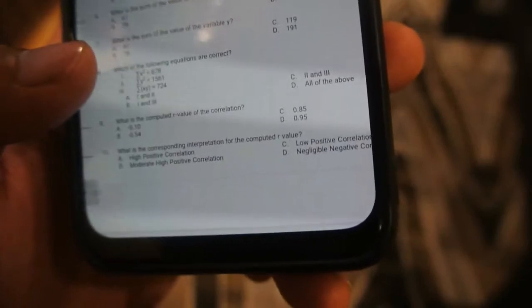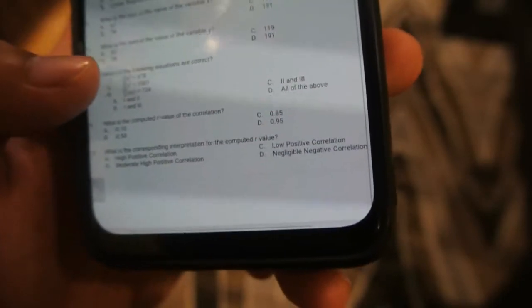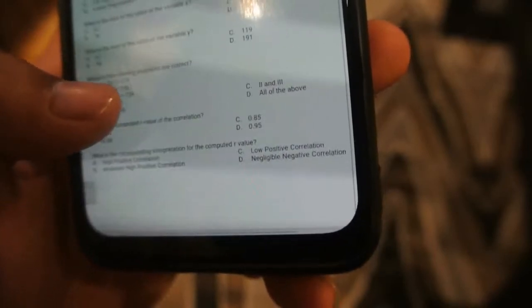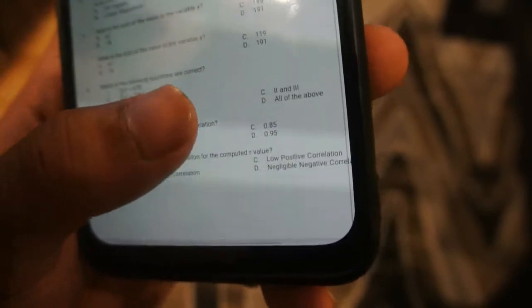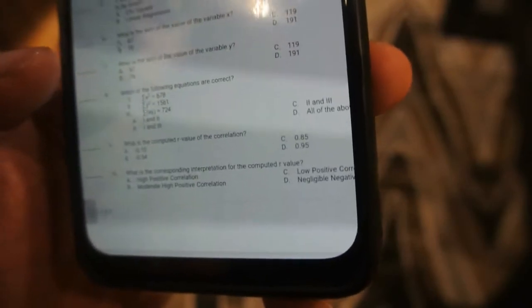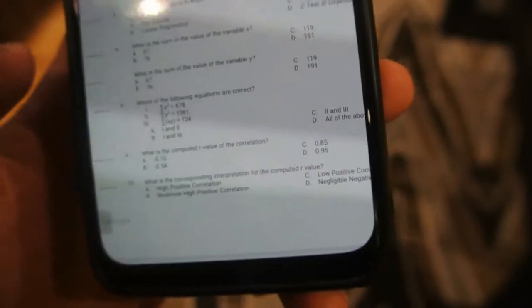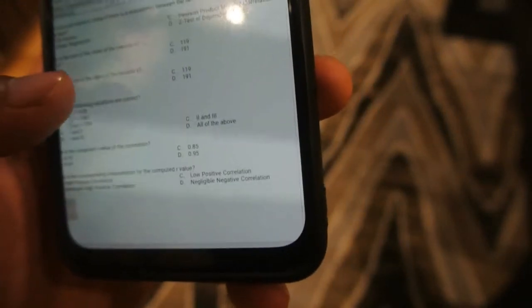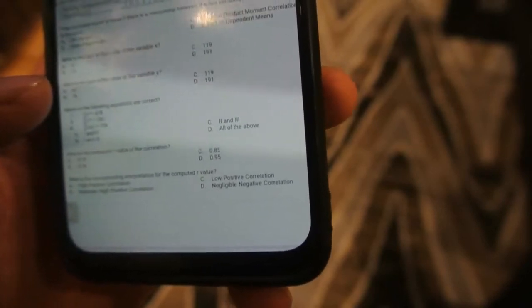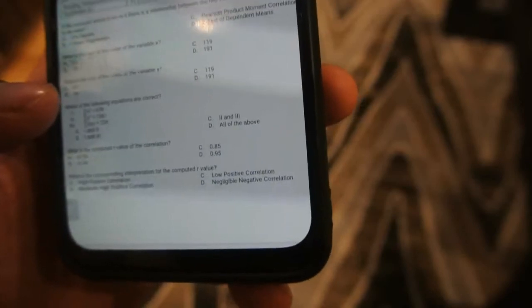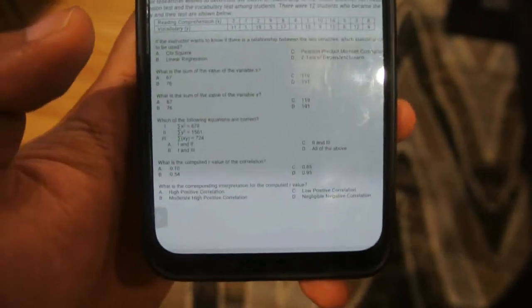Number 10, what is the corresponding interpretation? Letter D. Pwede rin tayo maglagay ng letter E kung di tayo sure. Corresponding interpretation, kasi ano siya eh, negative siya tas mababa. Letter D, sagot natin dun. Okay, tapos.